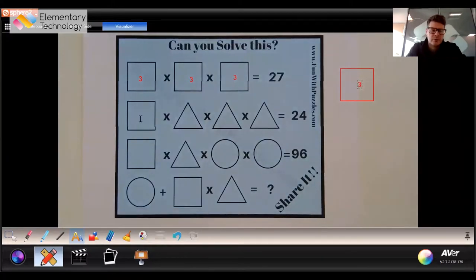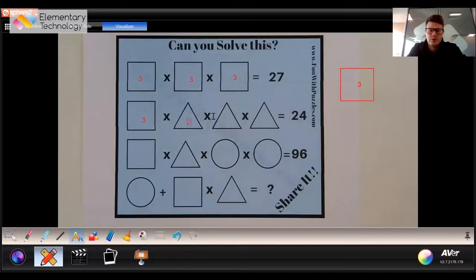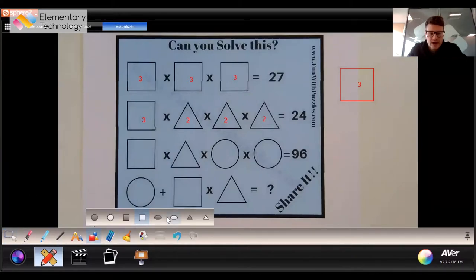Next one across, we know this is a 3 already so we'll put a 3 in there. If we go 3×2×2×2 that gives us 24. We can put them in the middle to make them nice and neat so it's very engaging for our pupils. We've worked out that the triangle is a 2. We'll do exactly the same as we did before.